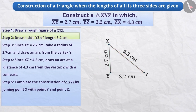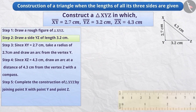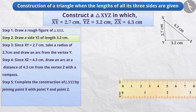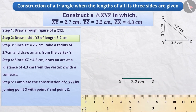Step 2. Now, with the help of a ruler, we will draw any one side of the triangle. Like here, we have drawn the side YZ with length 3.2 cm. Note that we can start with any side.